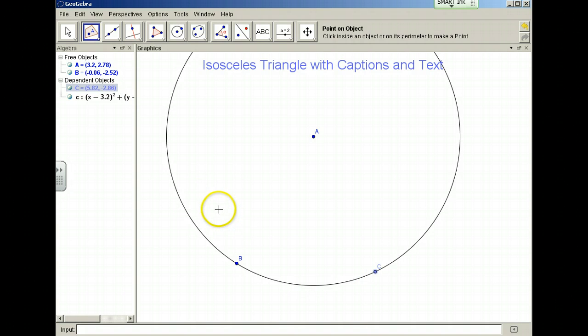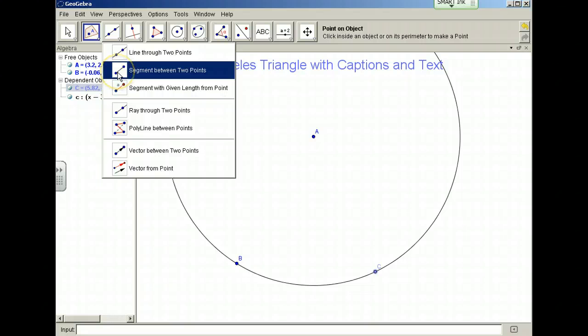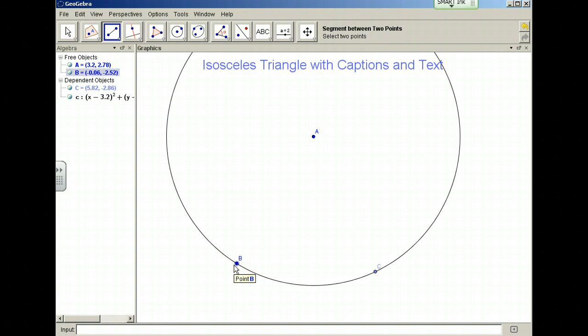We then have an isosceles triangle by connecting these three points. So I'll use segment between two points and connect B to A, A to C, and C to B.